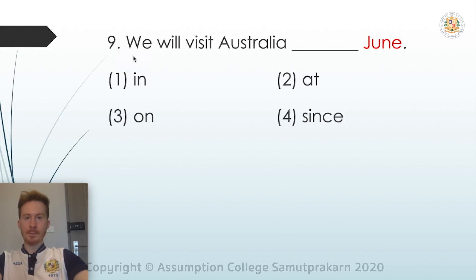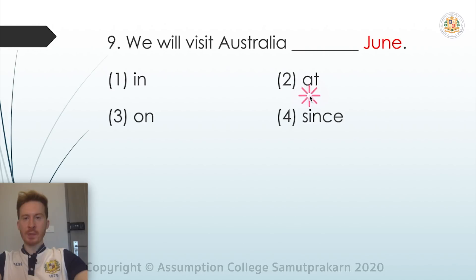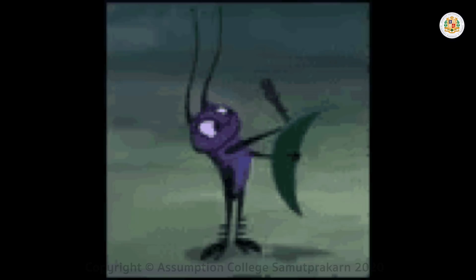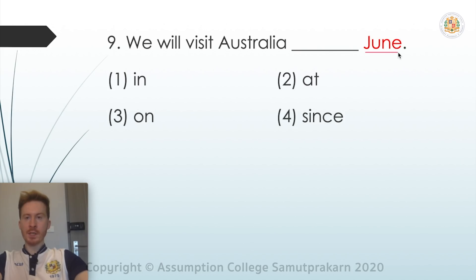Question nine: 'We will visit Australia ___ June.' In this blank we need a preposition — June is a month, and for months of the year we use the preposition 'in'. So number one is the correct answer: in.